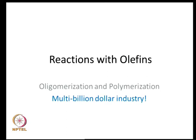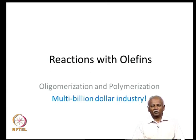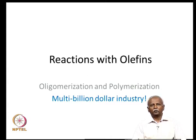This lecture is regarding the reactions of olefins, where olefins are the prime actors in the whole scene. There are two major reactions we will be talking about: one is oligomerization, and the other is polymerization of olefins. Both are probably multi-billion dollar industries, with large demand for products generated from simple olefins like ethylene and propylene. It is important that we look at the chemistry behind these systems.